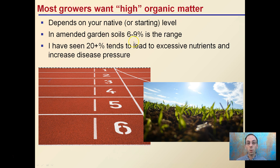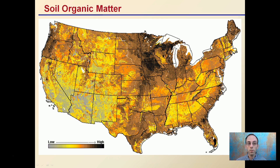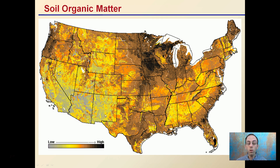I've even seen lower organic matter percentages performing at a high level. Overall in the country, the higher ranges of soil organic matter are shown in darker colors. You can see soils tend to be a little bit higher in organic matter in certain regions and a little bit lower in the southwest region. It just gives you that perspective of where higher native or natural soil organic matter is present.